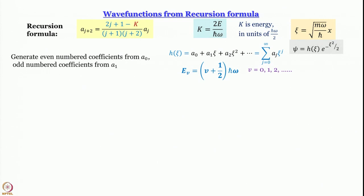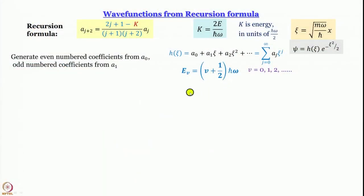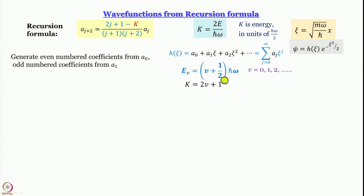This is where our treatment deviates from Griffiths, who uses a more rigorous general approach. Since we have already worked out Eᵥ, we will use that expression to reach the answer more quickly. For v = 0, 1, 2, …, Eᵥ = (v + ½)ħω. Substituting into k = 2E/(ħω), we get k = 2v+1.